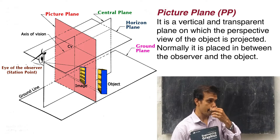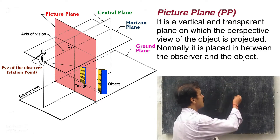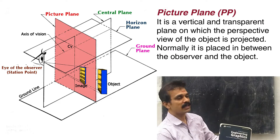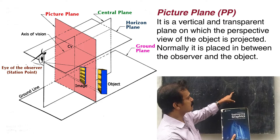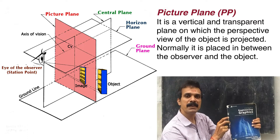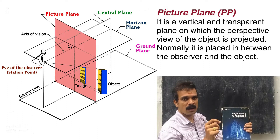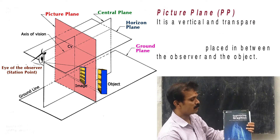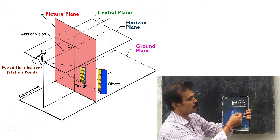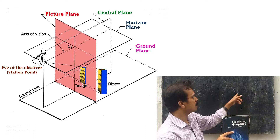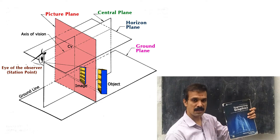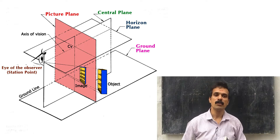For example, suppose this is an object and this is a digital camera — if we are taking a photo of this object, the object can be seen as an image on the screen. At that point, the screen can be taken as the picture plane. You know that when we take a photograph by putting the screen here, the image of the object will be smaller than the original. So this is a perspective projection — here, this is the picture plane and this is the ground plane.